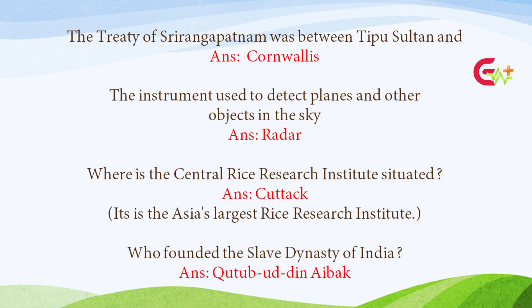The Treaty of Sriranga Patanam was between Tipu Sultan and Cornwallis. The instrument used to detect planes and other objects in the sky is Radar.